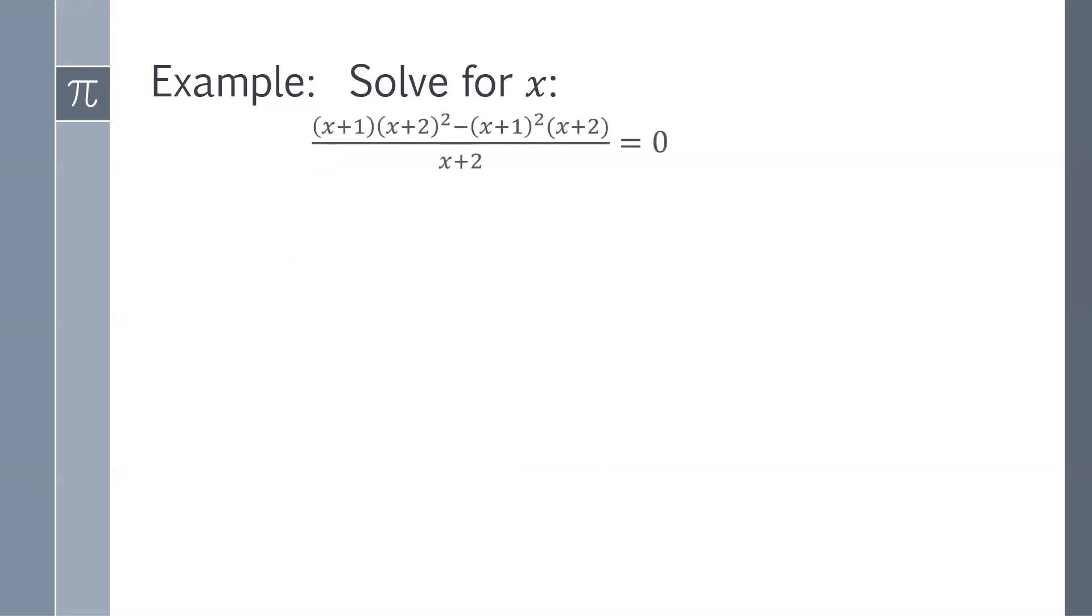Here we've got [(x + 1)(x + 2)² - (x + 1)²(x + 2)]/(x + 2) = 0. First thing we can do is multiply both sides by x + 2. And we get (x + 1)(x + 2)(x + 2) - (x + 1) = 0.